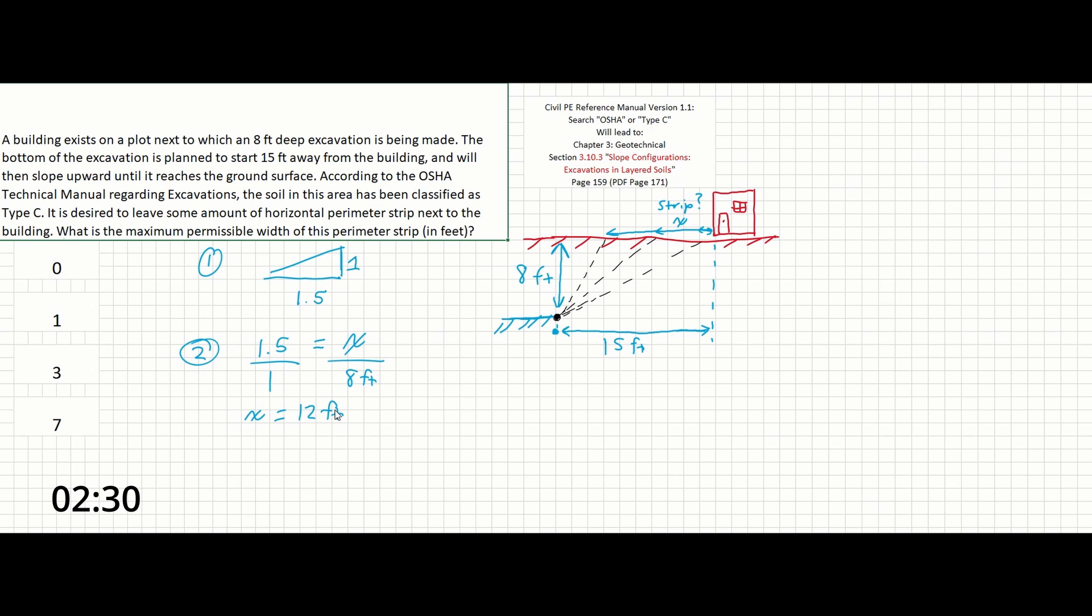So finally, all we have to do is find the space available for a perimeter strip by subtracting the horizontal length of the excavation from the total horizontal distance from the bottom of the excavation to the building.